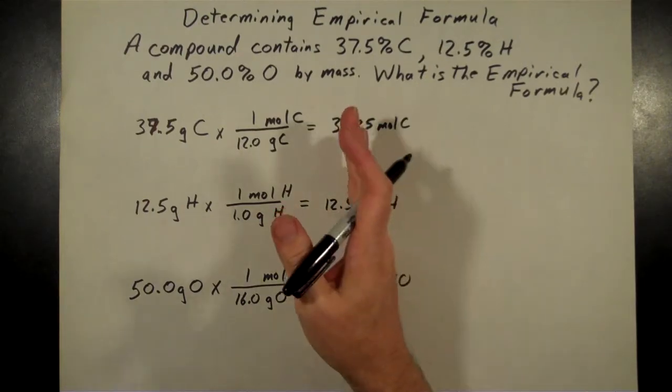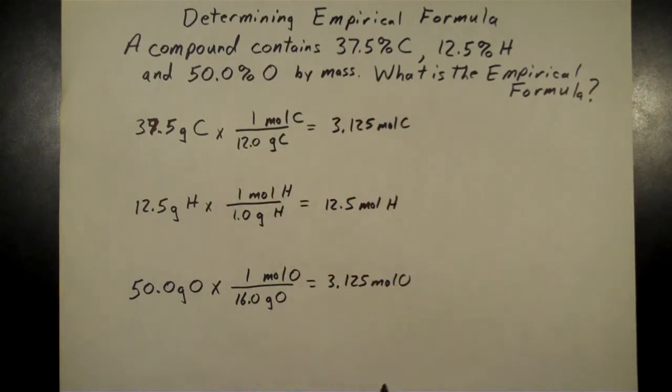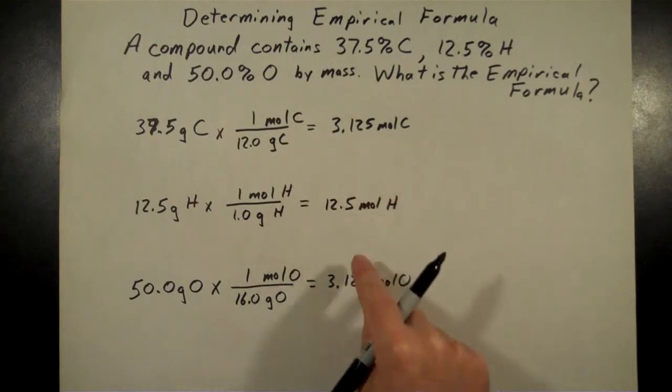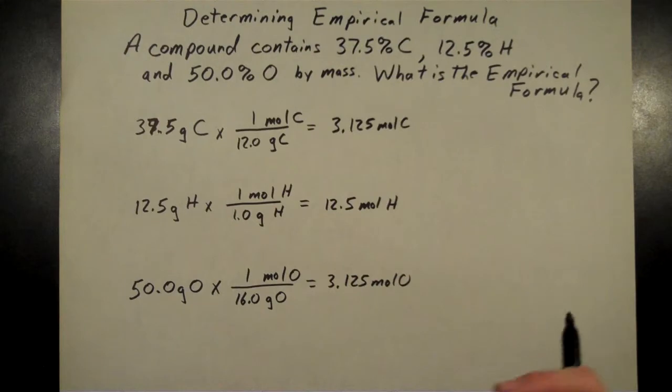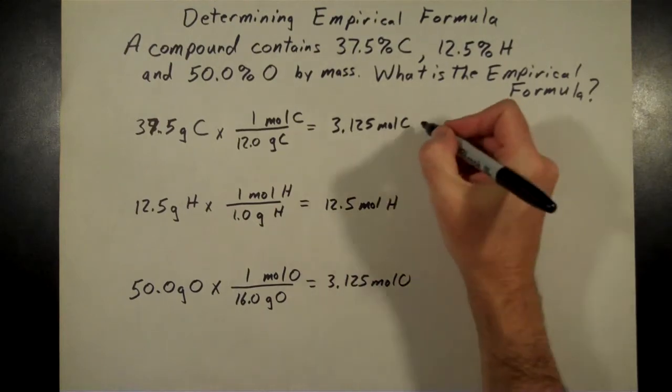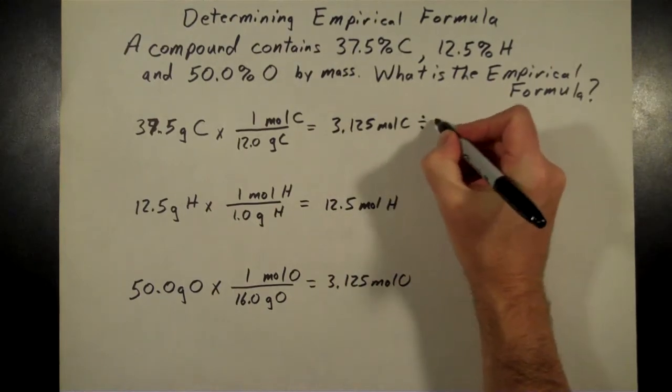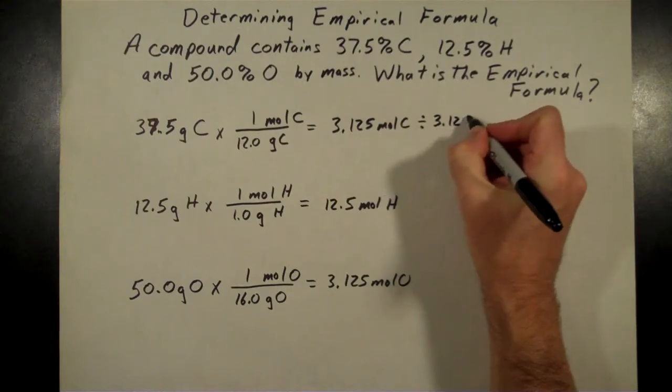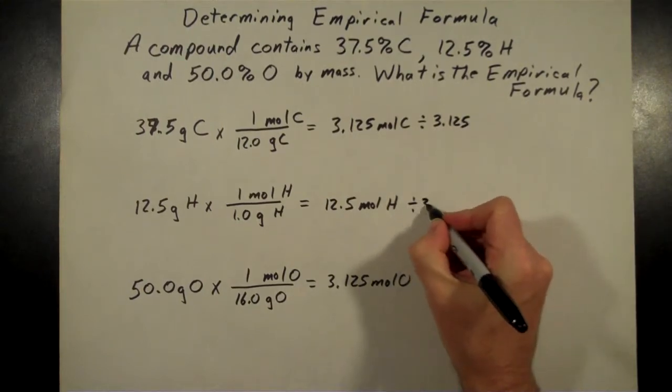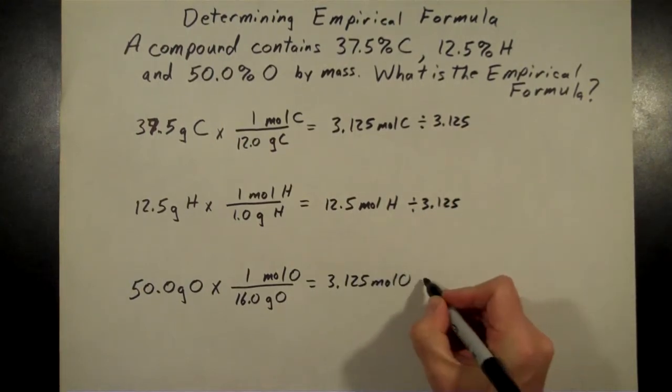All right. The next step, then, once we've got mole amounts from here on, whatever we do to one of these, we're going to do the same thing to all. We're going to divide them all by the smallest of the amount. And it turns out two of them have the same smallest amount. That's that 3.125. And so that's what we're going to divide everything by, is divide by that 3.125 amount.